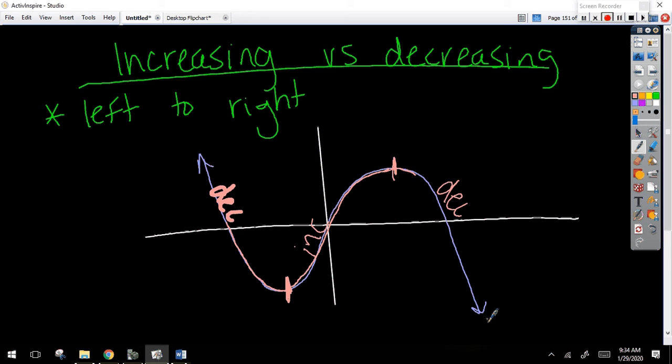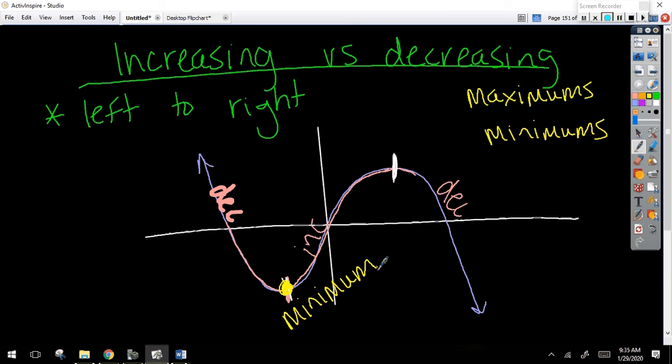All right. So these points, these stopping points that you mentioned, are very important. These are called extreme points. And we have some different types. We have maximums and we have minimums. Which one do you think this is? It's a minimum. Why? Below. You're exactly right. This would be what we call a minimum. It's a low point on the graph. It's where it changes directions. It stops decreasing and it starts increasing.